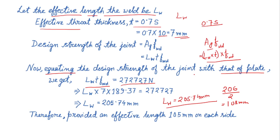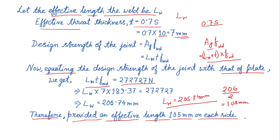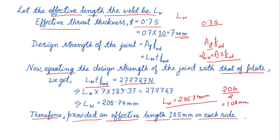But we have finally provided a little more than the required one. Therefore, provided an effective length of 105 mm on each side. So this is the design of the longitudinal fillet weld according to the given problem.